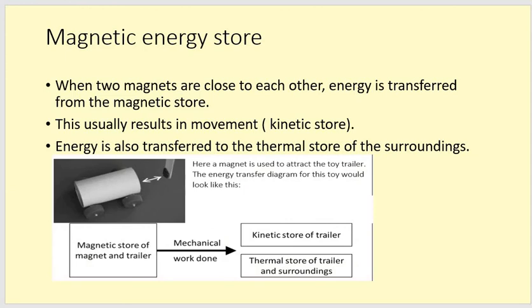Now magnetic energy stores. If you have two magnets close to each other energy is transferred from the magnetic store. And normally this results in movement. So the energy transfer is normally to the kinetic store. Because remember kinetic is for movement. Think about kinetic looks like somebody kicking their legs out. And kicking is a type of movement. Energy will also be transferred to the thermal store of the surroundings. There will be some friction to overcome.